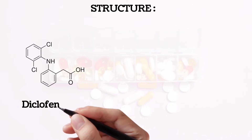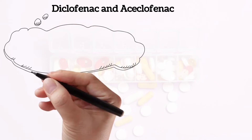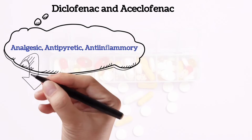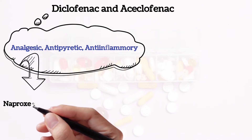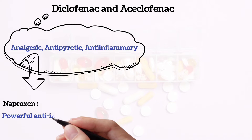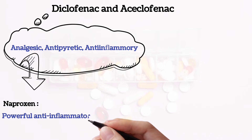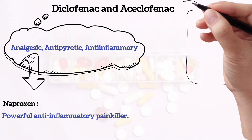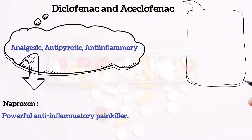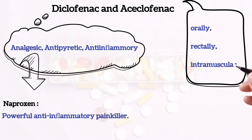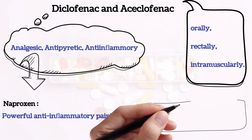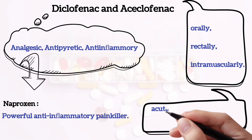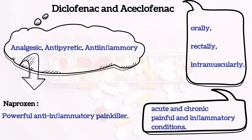The structure is like this. It is an analgesic, antipyretic, and anti-inflammatory drug, similar in efficacy to naproxen, which is a powerful anti-inflammatory painkiller. It is available in a number of administration forms and can be given orally, rectally, or intramuscularly. Diclofenac is considered one of the few NSAIDs of first choice in the treatment of acute and chronic painful and inflammatory conditions.